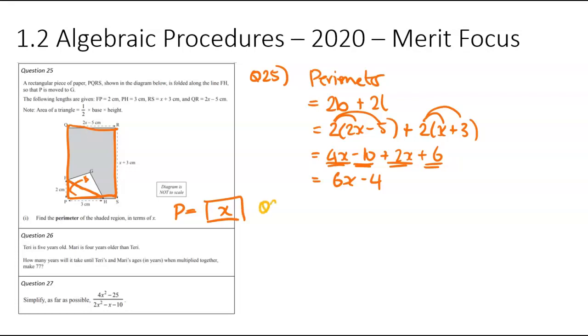We are now on to question number 26. Terry is 5 years old, and Marie is 4 years older than Terry. How many years will it take for Terry's age and Marie's age to multiply to get to 77? So what this is trying to say is Terry's age times Marie's age is equal to 77. But we need to figure out how many years that happens.